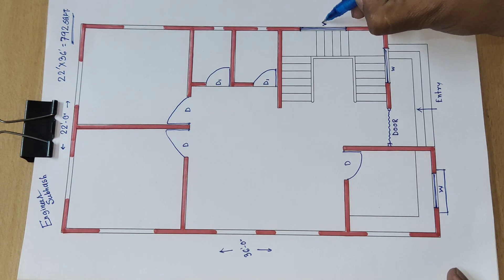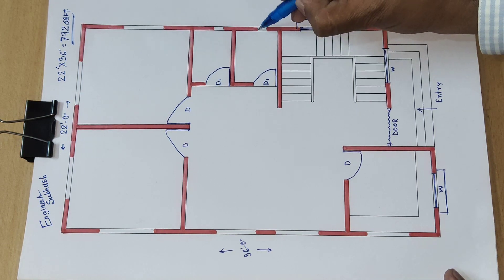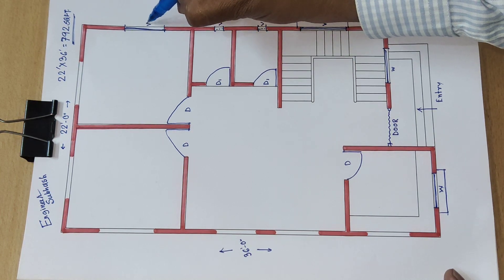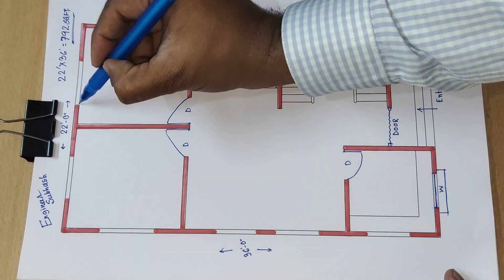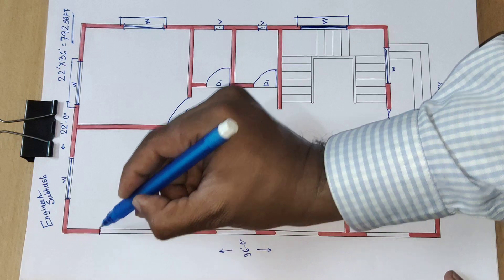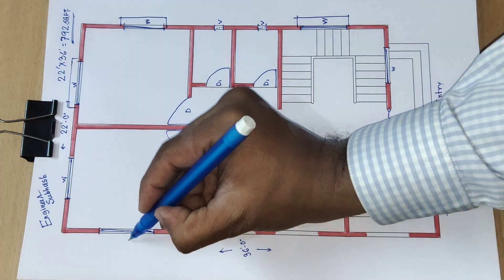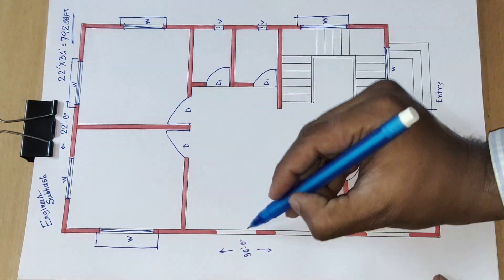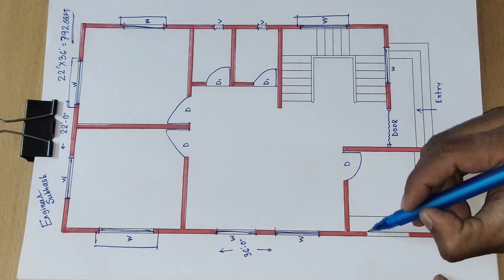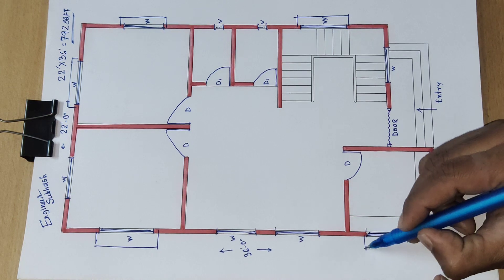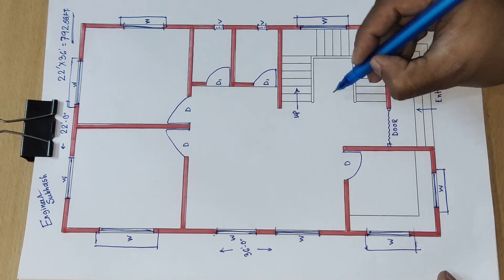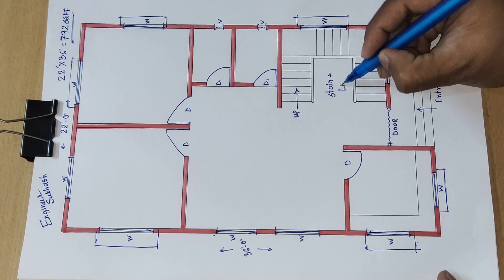Here we have W for window, and here is a ventilator. We will also add another ventilator here. This area is marked as W, and beyond this is the living area plus living room.